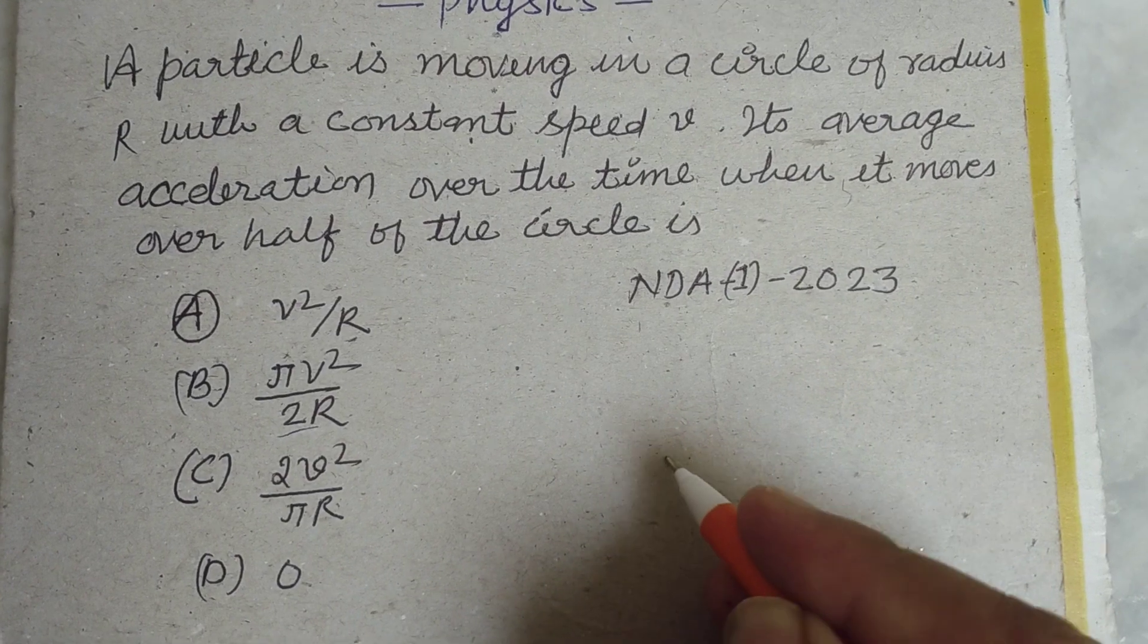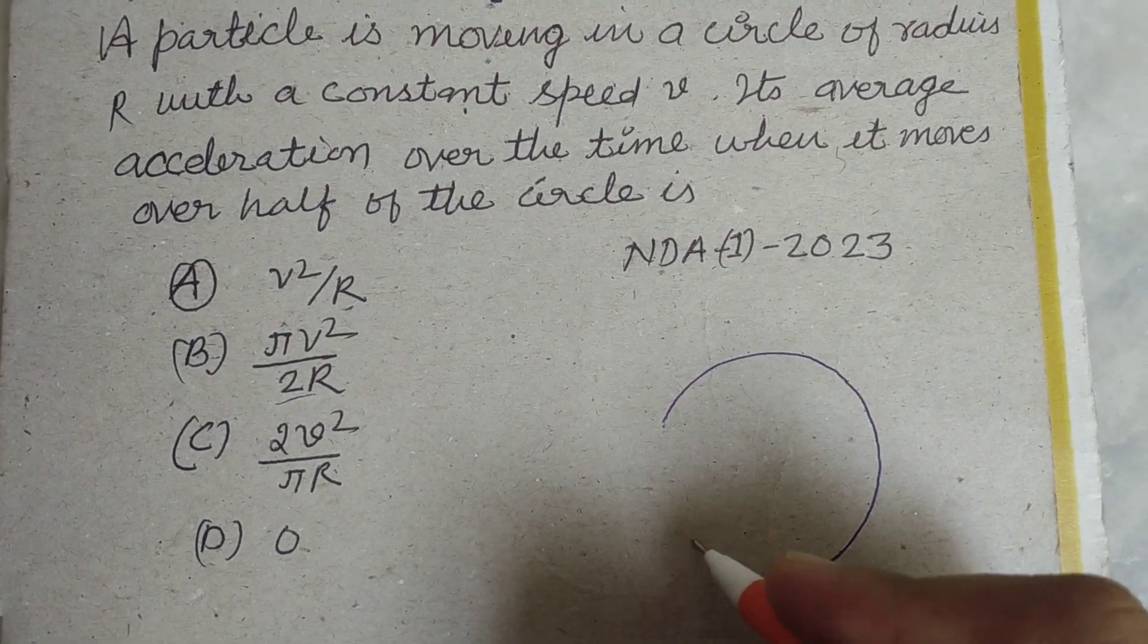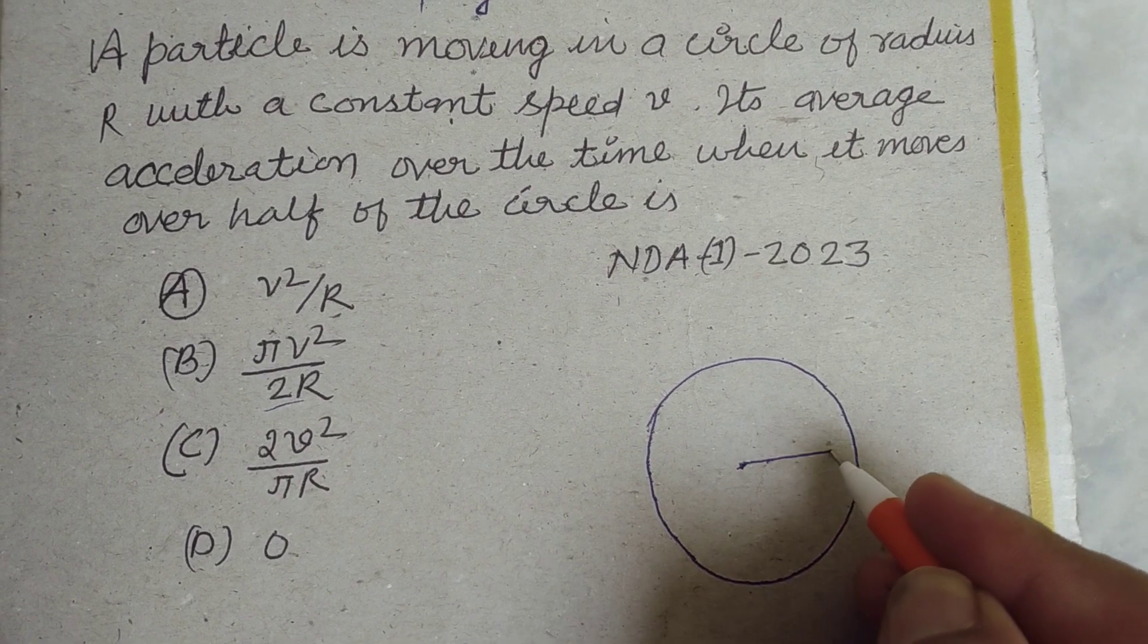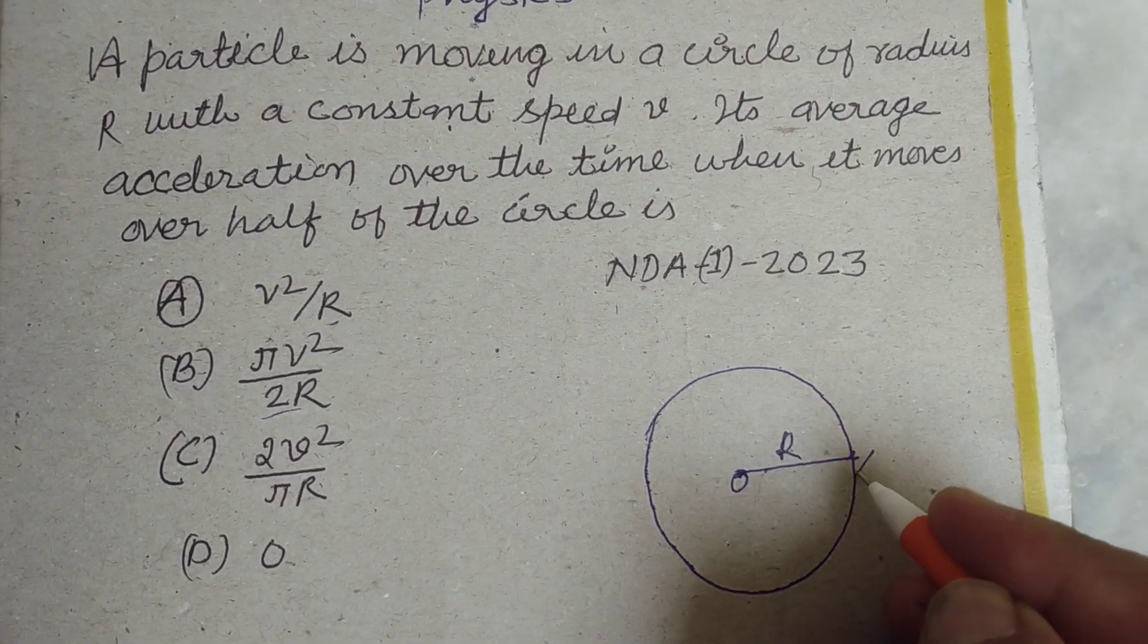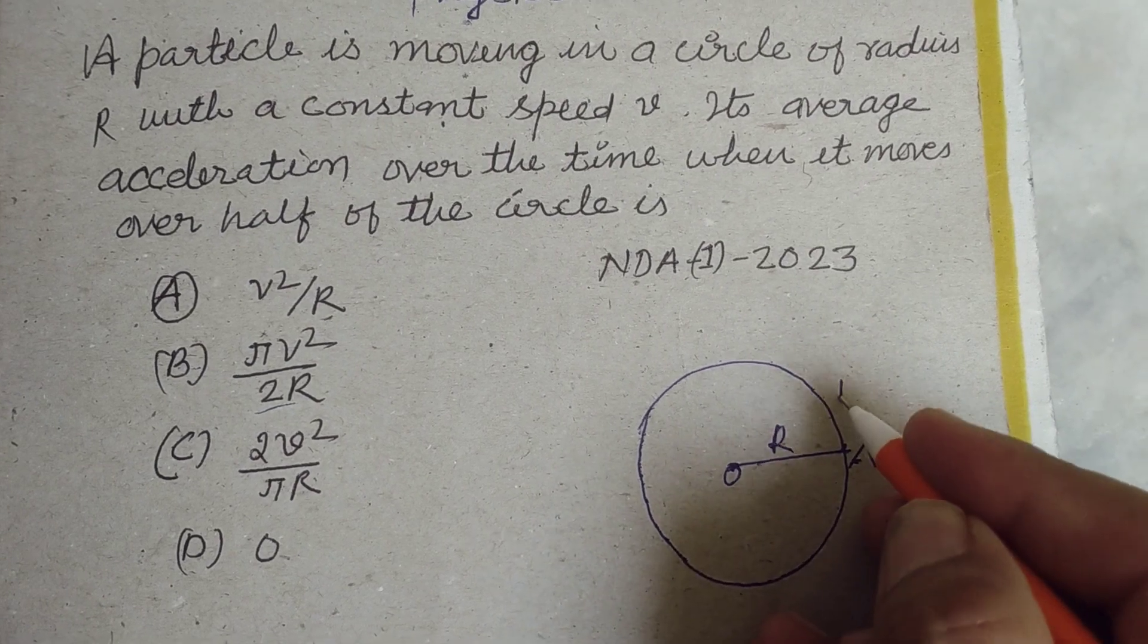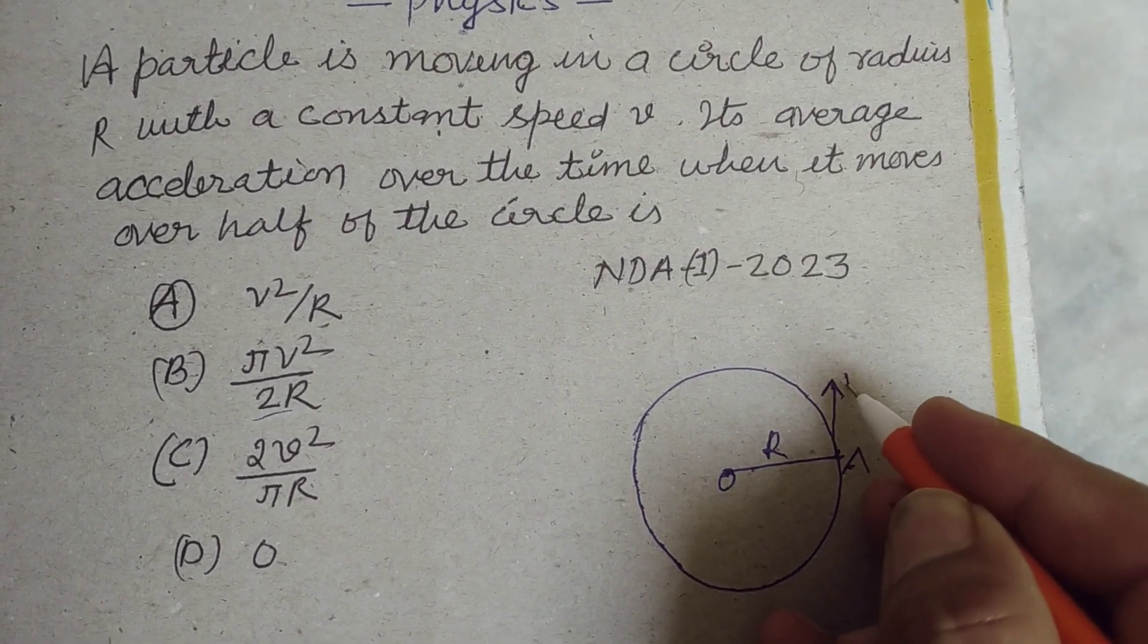So student, first we make a circle of radius R, its center O, and particle is moving from point A with speed V.